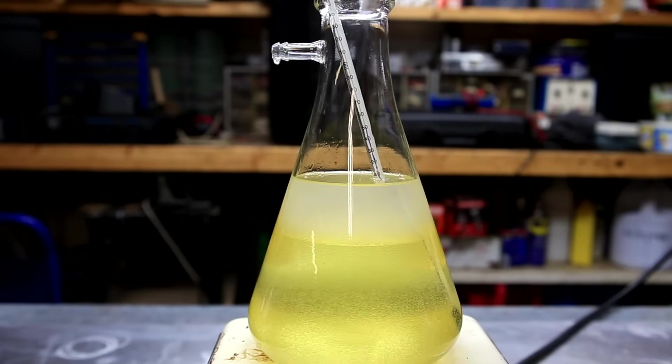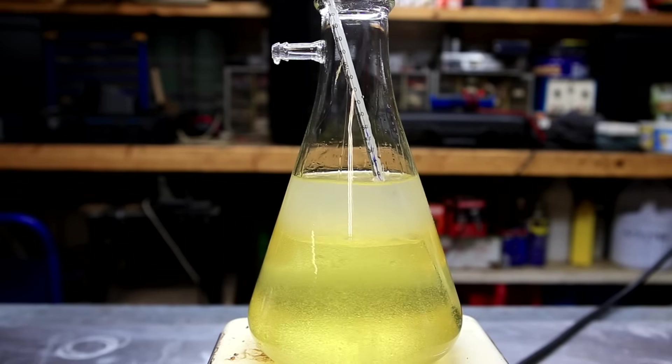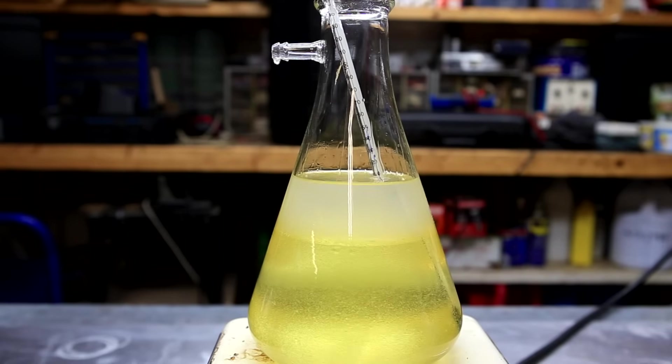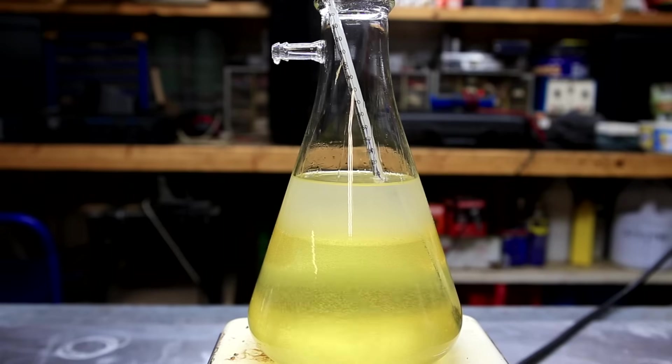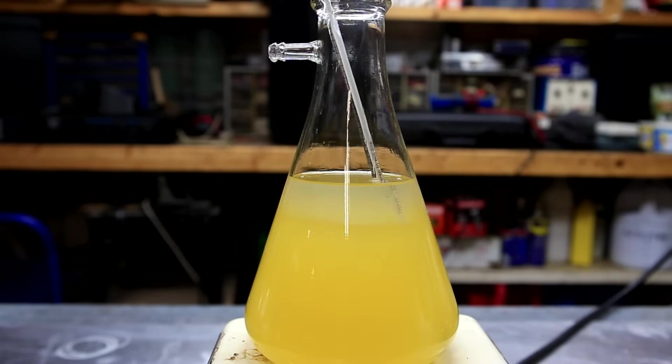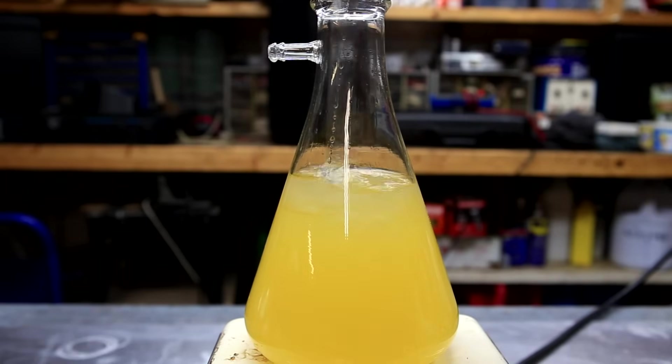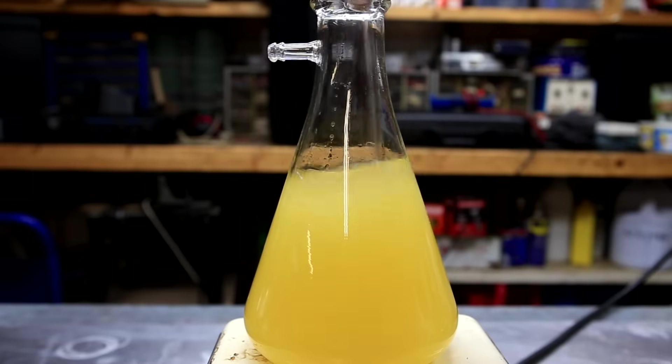The methanol is immiscible with the vegetable oil, and you can see it immediately forming a layer. This can pose a problem, but to get around it, we'll simply need to use quite strong stirring. If strong stirring is not used, it will simply stay as two separate layers and the reaction won't work very well.